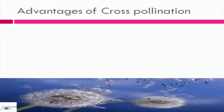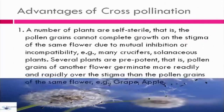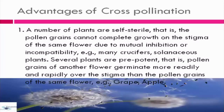As discussed in the previous video, cross-pollination has both advantages and disadvantages. For advantages: a number of plants are often sterile, meaning the pollen grains cannot complete growth on the stigma of the same flower due to mutual inhibition or incompatibility. Many cruciferous plants and several others are prepotent — pollen grains from another flower germinate more readily and rapidly on the stigma than pollen grains of the same flower.